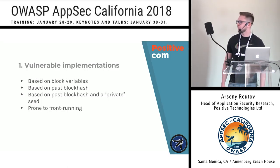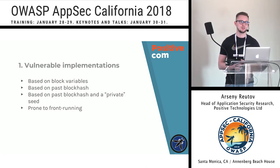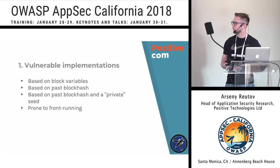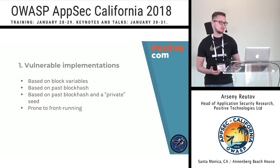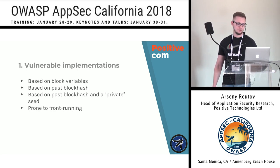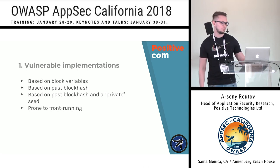I discovered four categories of vulnerable contracts. The first is based on block variables, the second on past block hash, the third on private seed, and the fourth on front running. I will explain each of these categories. Let's start with random number generators based on block variables.